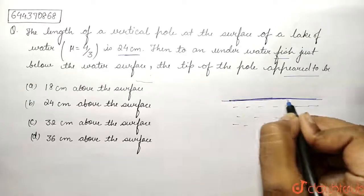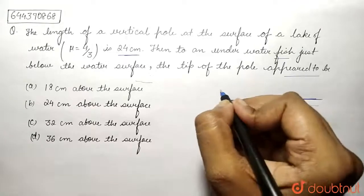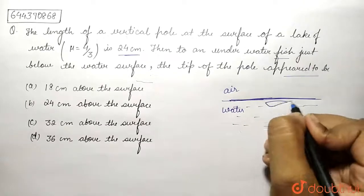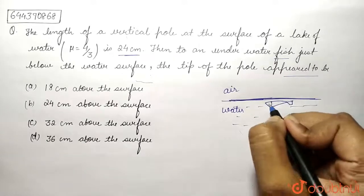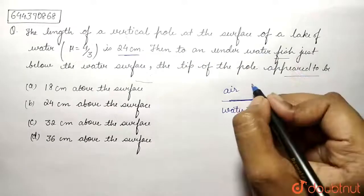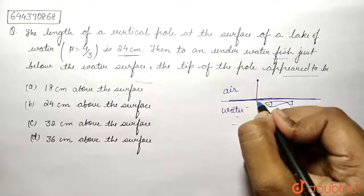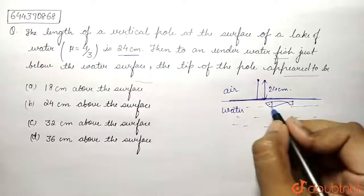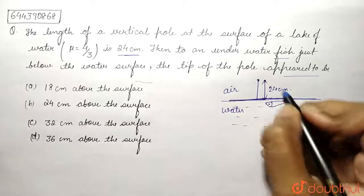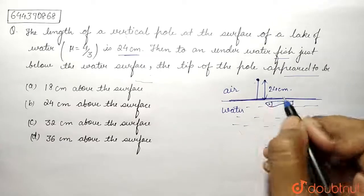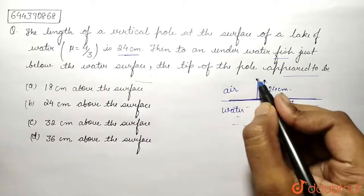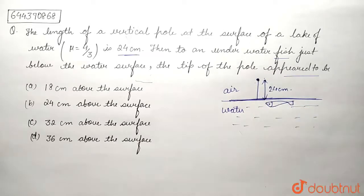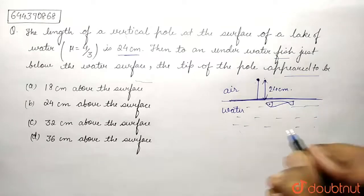This is the surface separating the air-water medium, and here on the surface of water a fish is present. A vertical pole is present over here and it is having the length 24 centimeter. The fish is seeing the tip of this pole and we need to find what is the length above the surface of water the tip is present. That means we need to find the apparent length of the pole.